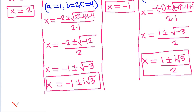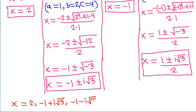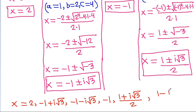So we get all 6 values of x: x equals 2, x equals minus 1 plus iota times square root of 3, x equals minus 1 minus iota times square root of 3, x equals minus 1, x equals (1 plus iota times square root of 3) over 2, and x equals (1 minus iota times square root of 3) over 2.